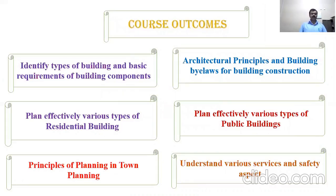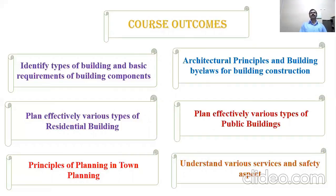Course outcomes: after studying this subject, you will gain knowledge on different points. You can identify the types of buildings, their requirements, and the components of a building. You will be aware about architecture principles and building bylaws for building construction. You can effectively plan residential buildings and public buildings such as offices, schools, etc. You can implement principles of building bylaws for town planning, implement the concept of three magnets, and understand various services and safety aspects.